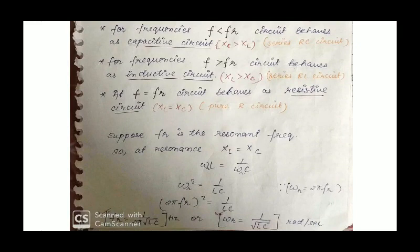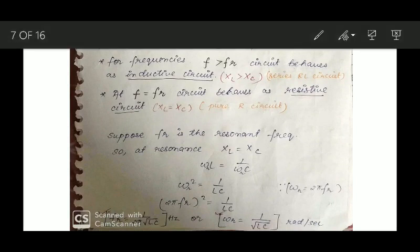To find the resonant frequency: at resonance XL equals XC, that is ωL equals 1 upon ωC. Deriving this, we get resonant frequency equals 1 upon 2π√(LC) in hertz, and angular resonant frequency ω equals 1 upon √(LC) in radians per second.